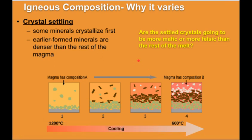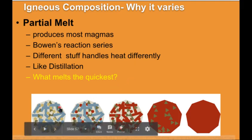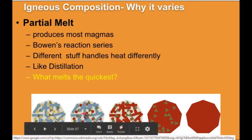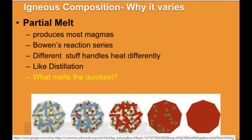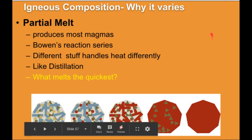Another similar way to change the composition of a magma is the idea of partial melting, where you only melt part of the rock and some of the crystals never melt and are left behind. This is the same idea but in reverse of crystal settling — you just start to warm up that rock, and the minerals with the lowest melting temperature start to melt first, leaving behind the minerals with the highest melting temperature, the more mafic minerals.